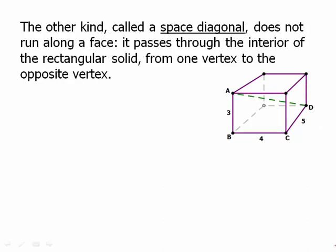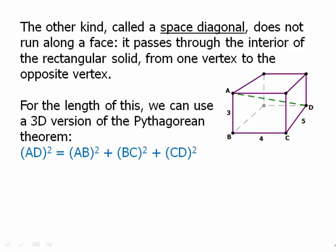The other kind is called a space diagonal. It does not run along a face. It passes through the interior of the rectangular solid from one vertex to the opposite vertex. So here we see it's going from A to B. For the length of this, we can use the 3D version of the Pythagorean theorem. So edge squared plus edge squared plus edge squared equals the length of the diagonal squared, the length of the space diagonal squared.